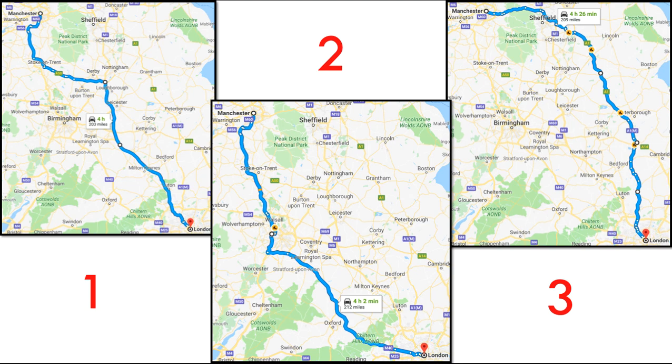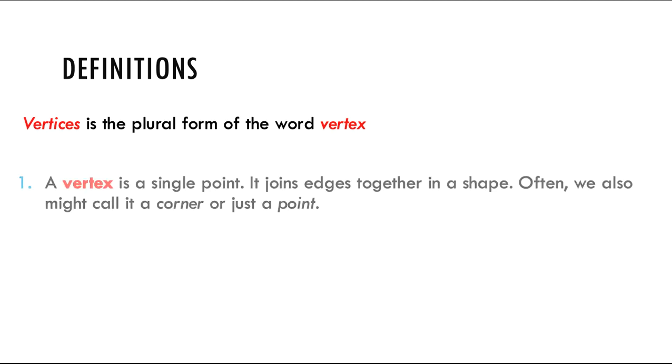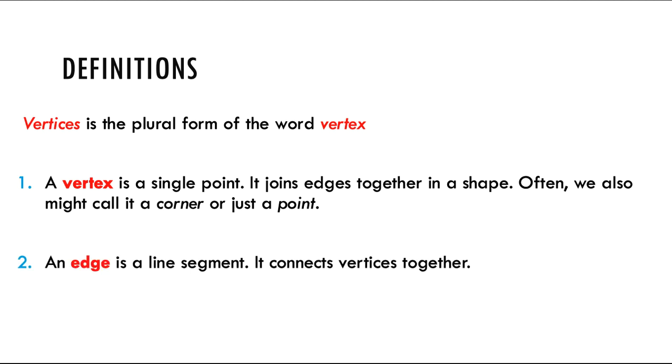Before we move on to the algorithm, we have to look at a few definitions. Vertices is the plural form of the word vertex. A vertex is a single point. It joins edges together in a shape and often we might also call it a corner or just a point. An edge is a line segment. It connects vertices together. I will be using this terminology interchangeably throughout the examples in the rest of this video.